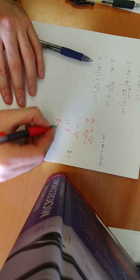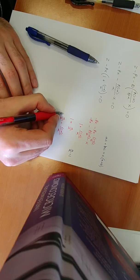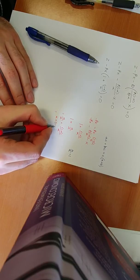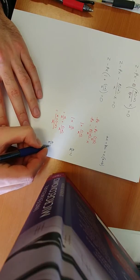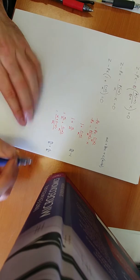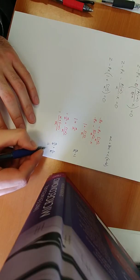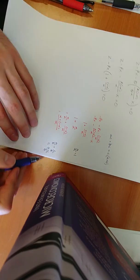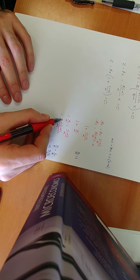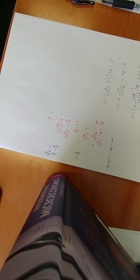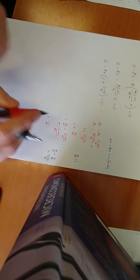I take alpha over alpha plus 1 minus alpha over alpha. Since these fractions have the same denominator, I can add the numerators: if I have A over B plus C over B, that equals A plus C over B. So this becomes alpha plus 1 minus alpha, all over alpha. The alpha terms cancel, giving me 1 over alpha. So this complicated term is actually just 1 over alpha.